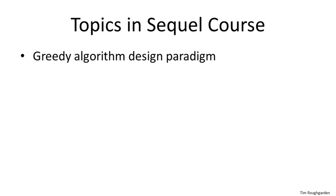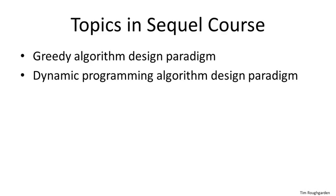There are a number of important concepts in the design and analysis of algorithms that we won't have time to cover in this five-week course. Some of these will be covered in the sequel course, Design and Analysis of Algorithms 2, which corresponds to the second half of Stanford's ten-week course. The first part of that sequel course focuses on two more algorithm design paradigms: the design and analysis of greedy algorithms, with applications to minimum spanning trees, scheduling, and information-theoretic coding; and the design and analysis of dynamic programming algorithms, with applications in genome sequence alignment and shortest path protocols in communication networks.